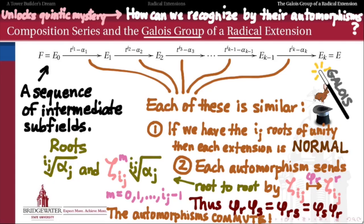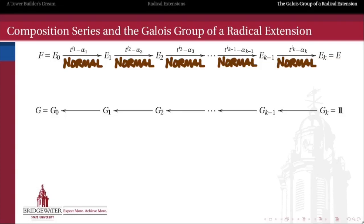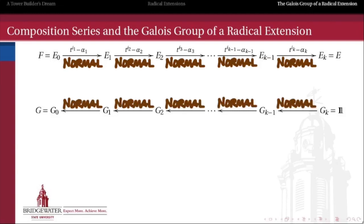Now let's wave our Galois correspondence magic wand and take this sequence of intermediate subfields, and instead get a sequence of intermediate subgroups between the Galois group of the total radical extension E over F and the trivial subgroup thereof. According to our Galois correspondence theorem, the fact that all of the field extensions up here were normal extensions — again as long as we have the roots of unity to play with — implies that the subgroup containments we get down here are all normal subgroup containments, so each G_i is actually a normal subgroup in G_{i−1}.